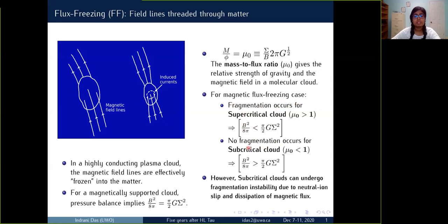However, for subcritical clouds, subcritical clouds can undergo gravitational instability due to neutral ion slip and the dissipation of the magnetic flux.